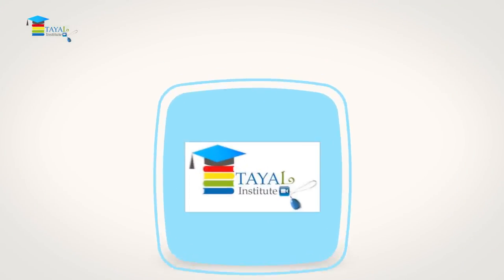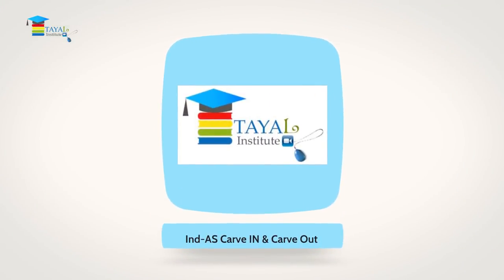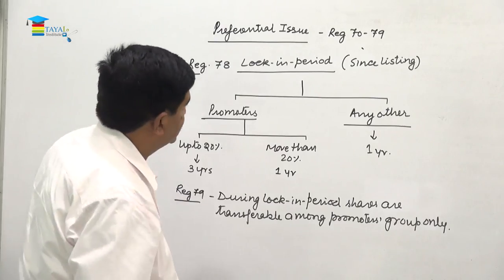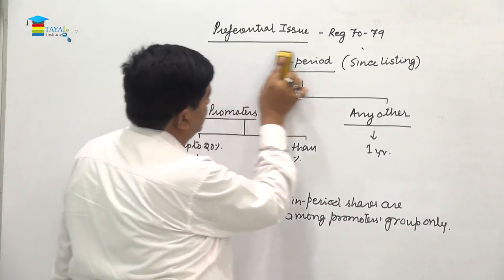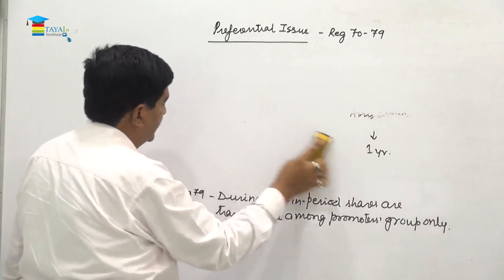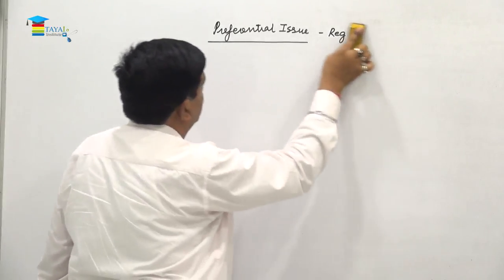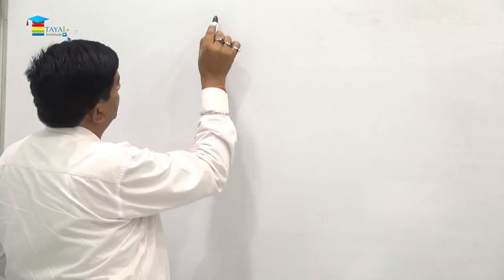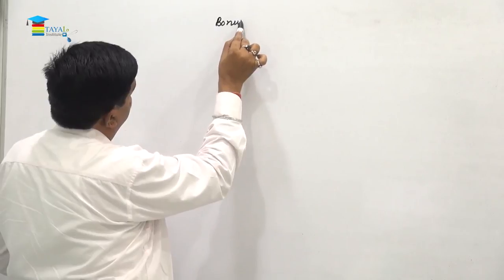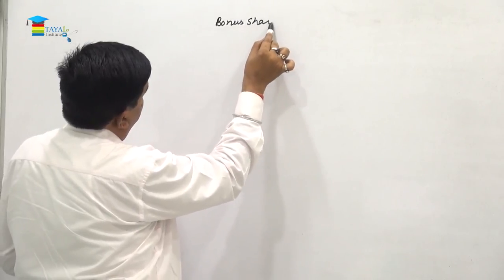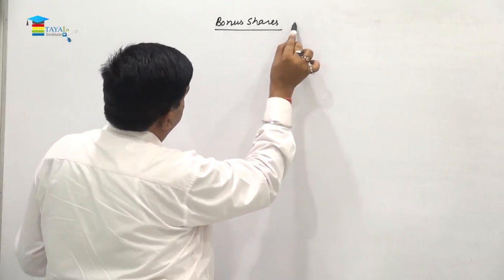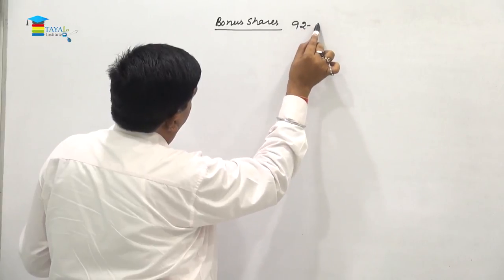This is the end of all the regulations relating to preferential issue of shares or other securities. We now come to the last relevant topic in SEBI ICDR regulations, which is the issue of bonus shares, covered under regulations 92 to 95.